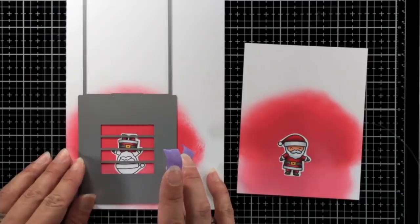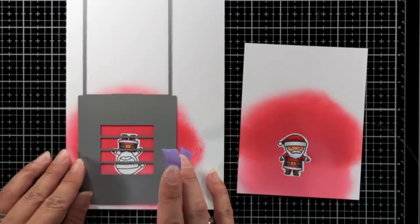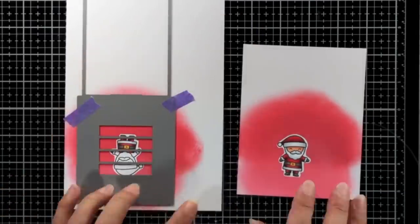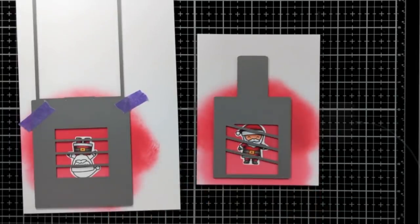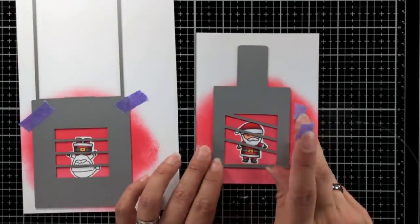So I'm taking the magic picture changer, lining up my image where I want it to go, holding it down with the purple tape, and then I will run these both through my die cutting machine.